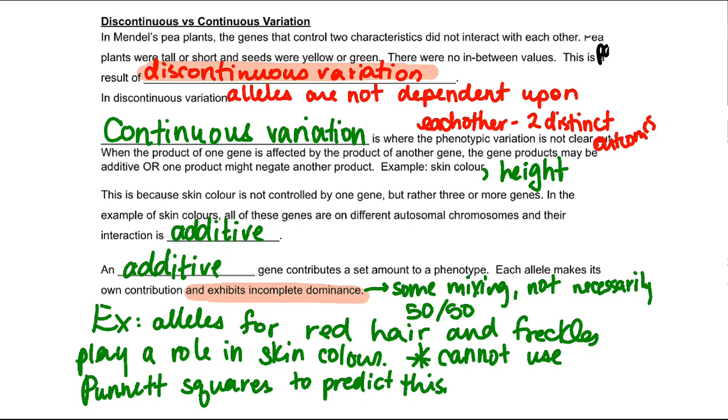If there's like 11 genes that contribute to skin color, it can be anywhere from you getting one from your dad and being not that dark, and then getting eight from your dad and being a bit more darker.